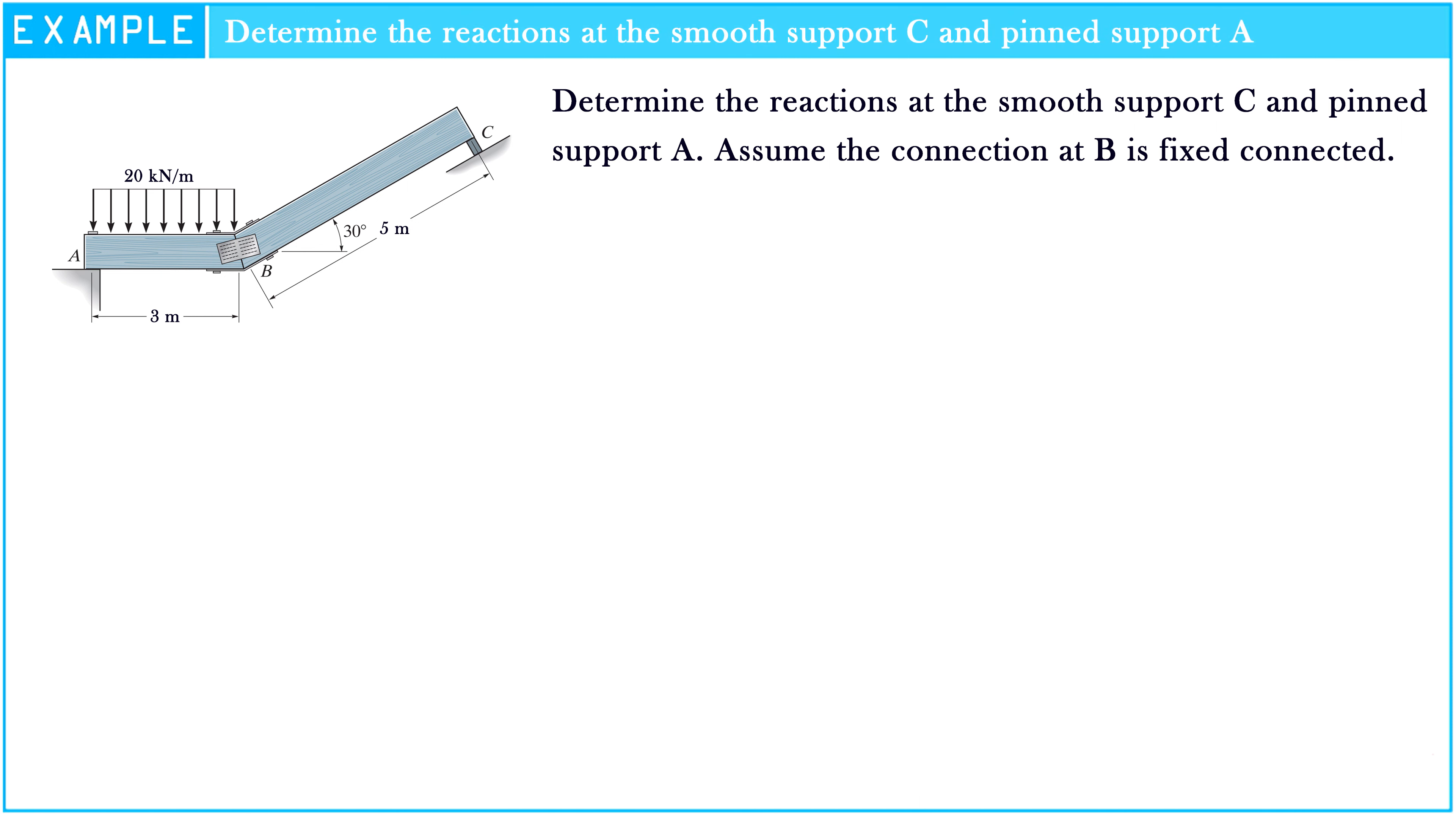We need to determine the reaction at the smooth support C and pin support A. Look at the figure of the problem. We see that there are two beams connected together at B, which is assumed as a fixed support. The three meter beam AB is subjected to a 20 kN per meter load, and the five meter beam BC is inclined about 30 degrees.